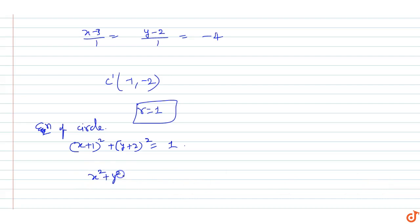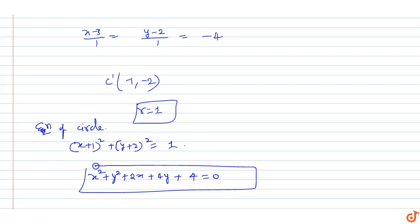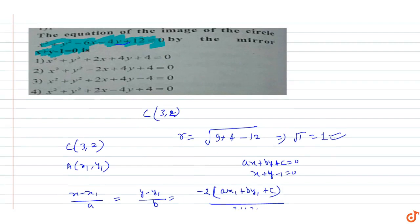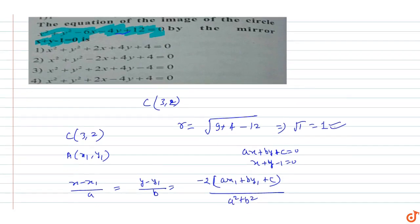Writing the equation of the image circle with center (-1, 1) and radius 1: (x+1)² + (y-1)² = 1, which expands to x² + 2x + 1 + y² - 2y + 1 = 1... The equation of the circle, the mirror image with respect to x + y - 1 = 0, equals x² + y² + 2x + 4y + 4 = 0. This is the image of the circle x² + y² - 6x - 4y + 12 = 0 by the mirror x + y - 1 = 0.